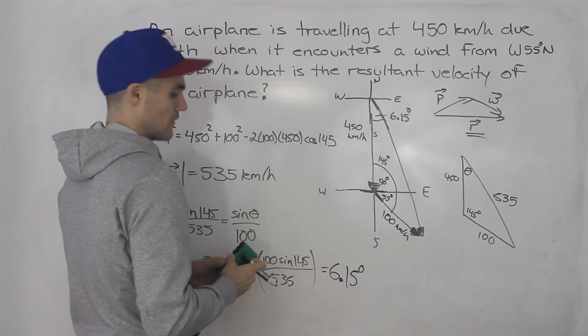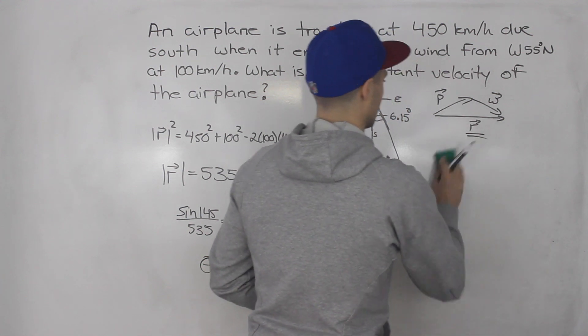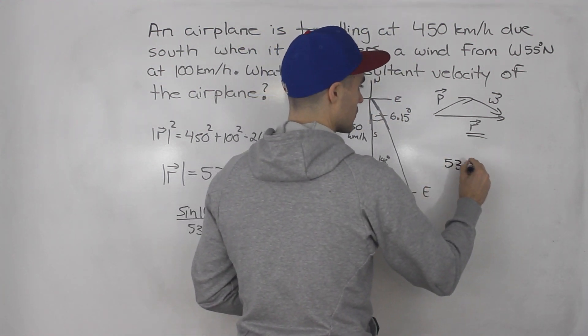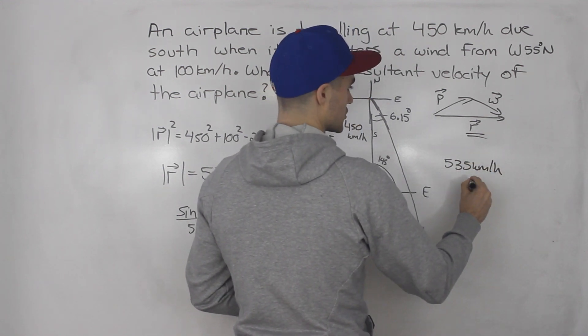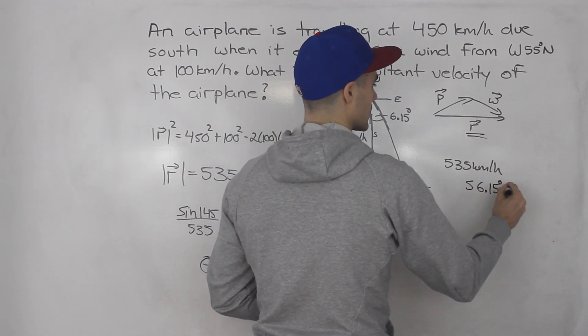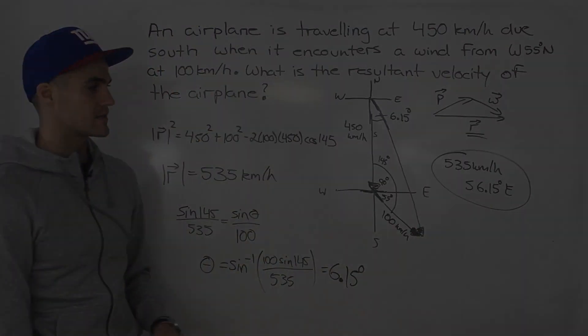So the final answer for this question, the resultant velocity is the speed, so 535 kilometers per hour, in a direction south 6.15 degrees east. That there is the final answer.